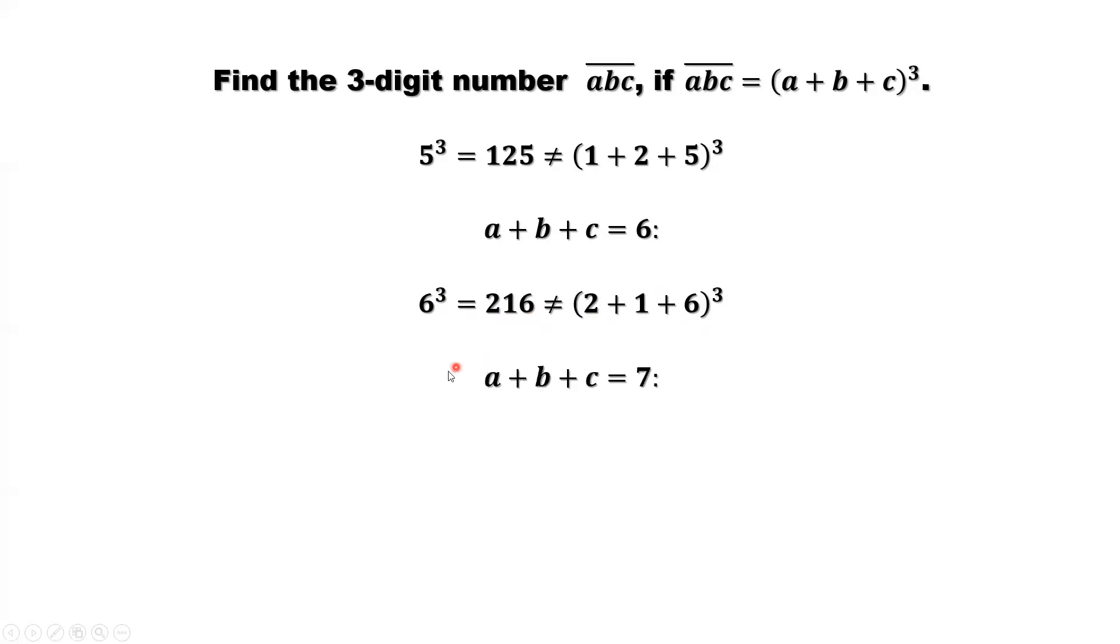Let's check 7. A plus B plus C equals 7. 7 to the power 3 equals 343. Sum of its digits: 3 plus 4 plus 3 equals 10. 10 to the power 3 is not same as 7 to the power 3. So the three-digit number 343 is not the answer.